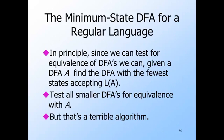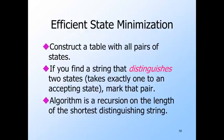Now let's address the problem of finding the equivalent DFA with the fewest states. There is an obvious but terrible algorithm: consider all DFAs with the same input alphabet but fewer states — there is a huge but finite number of them. This time we'll go straight to the good algorithm. The key idea is to build a table of pairs of states and figure out which pairs are distinguishable — meaning there is some input string that leads one of the pair to a final state and the other to a non-final state. Indistinguishable states can be merged into a single state.